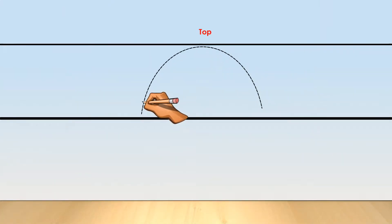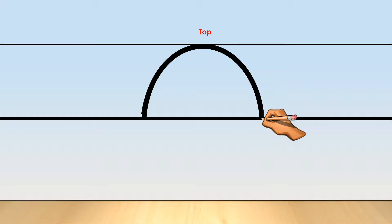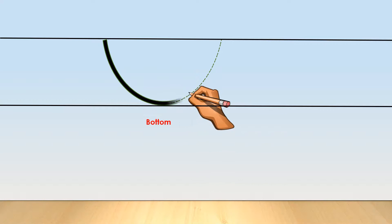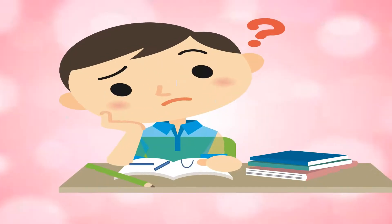This is curve to the right. This is curve to the top. And this is curve to the bottom. Is it confusing? No worries, I will explain again.